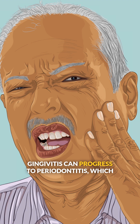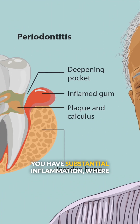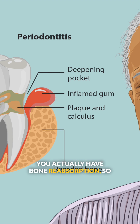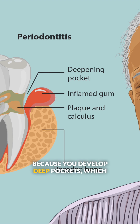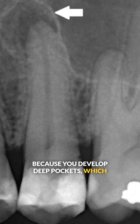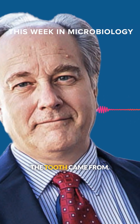Gingivitis can progress to periodontitis, which is a more severe form of gum disease where you have substantial inflammation, where you actually have bone reabsorption. So your jaw is actually dissolving — that supports your teeth. And then your teeth become infected because you develop deep pockets, which you might have heard as getting long in the tooth, which is literally where you have gum recession. And that's where long in the tooth came from.